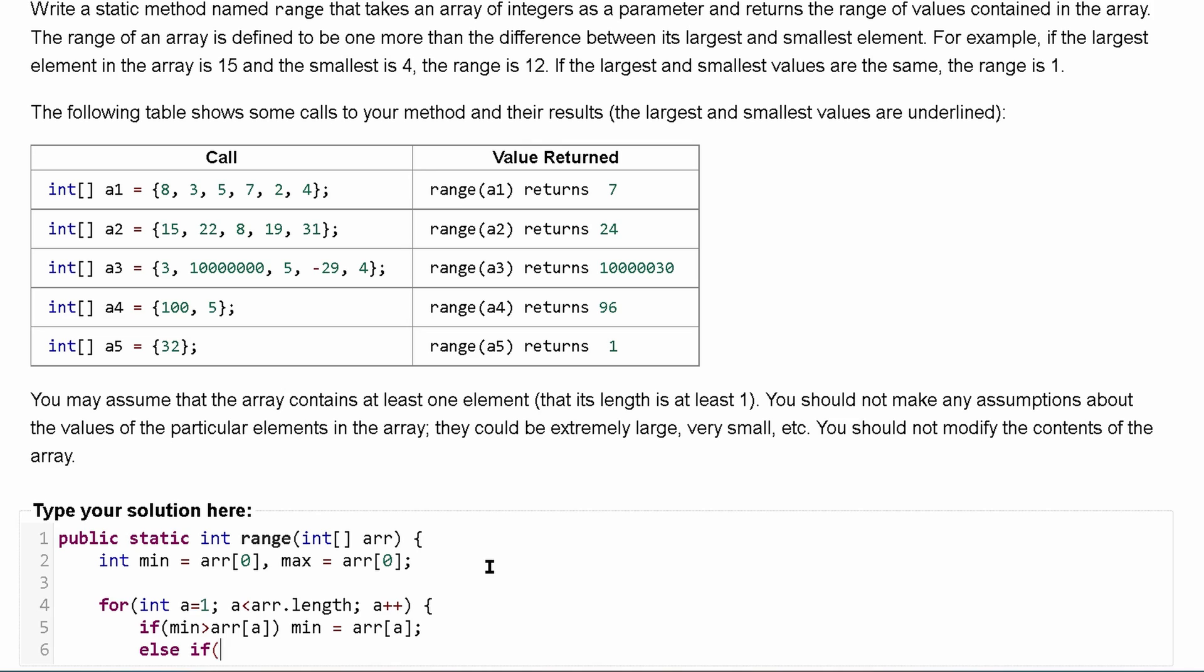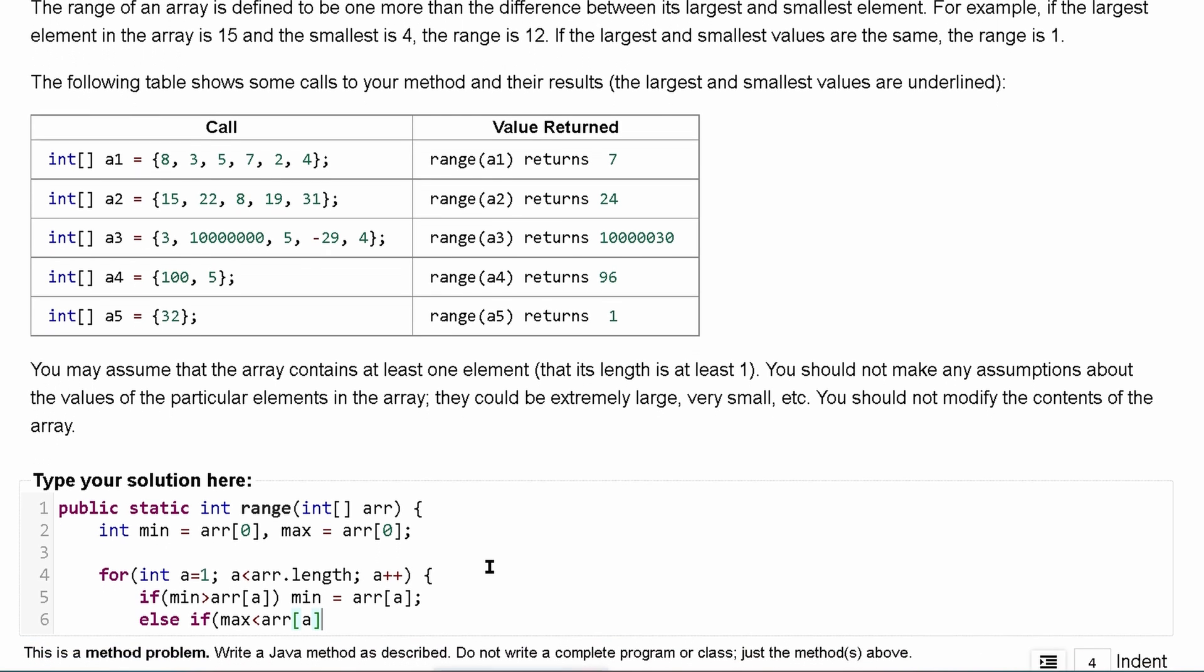Otherwise, what if it's for our max? If our max is less than our current array element, well, we can't have that.